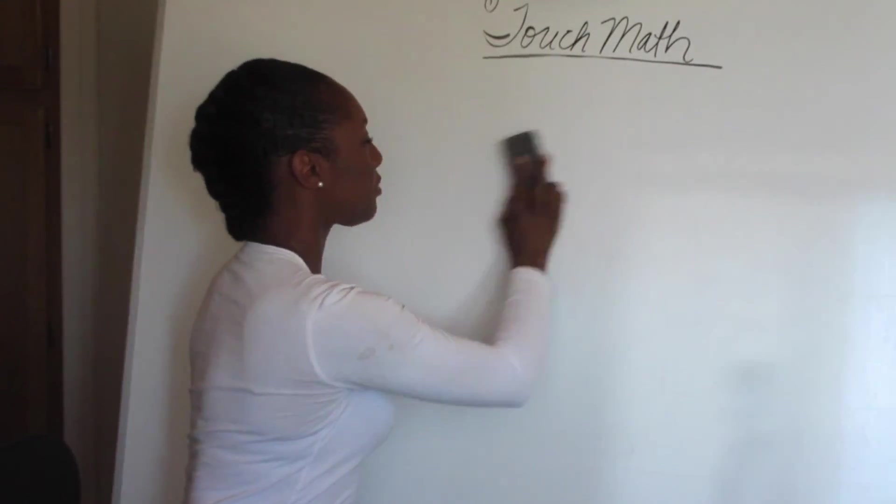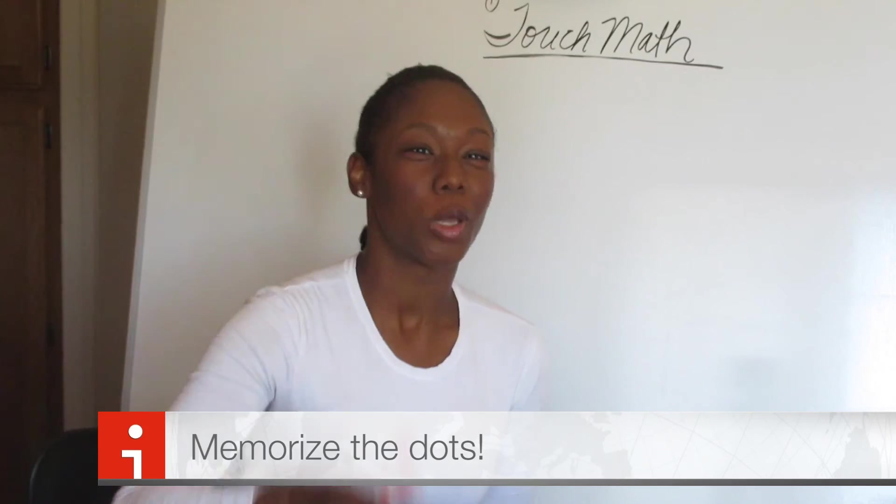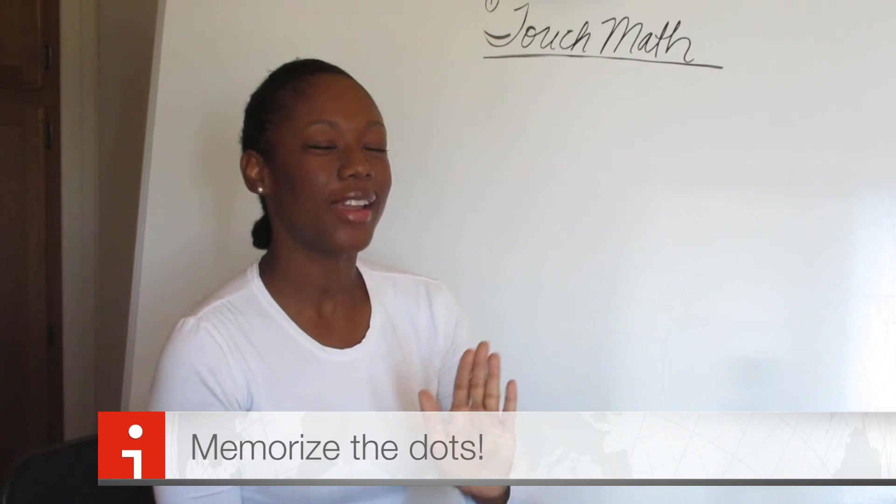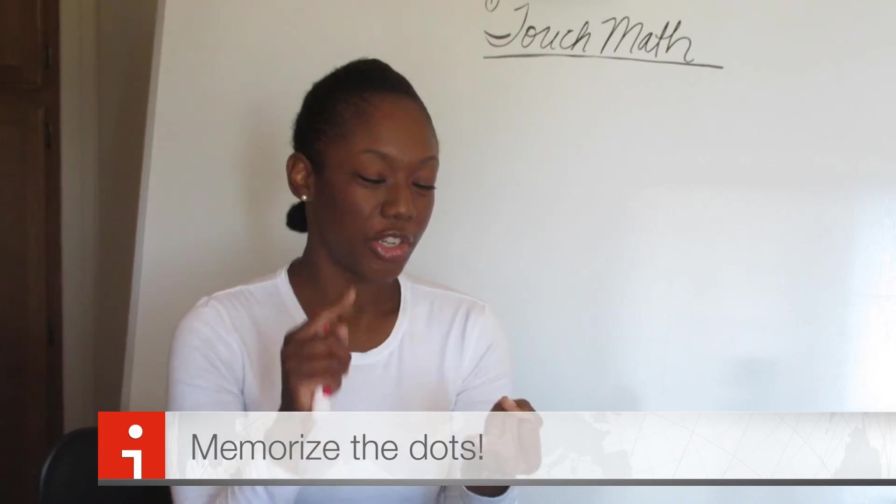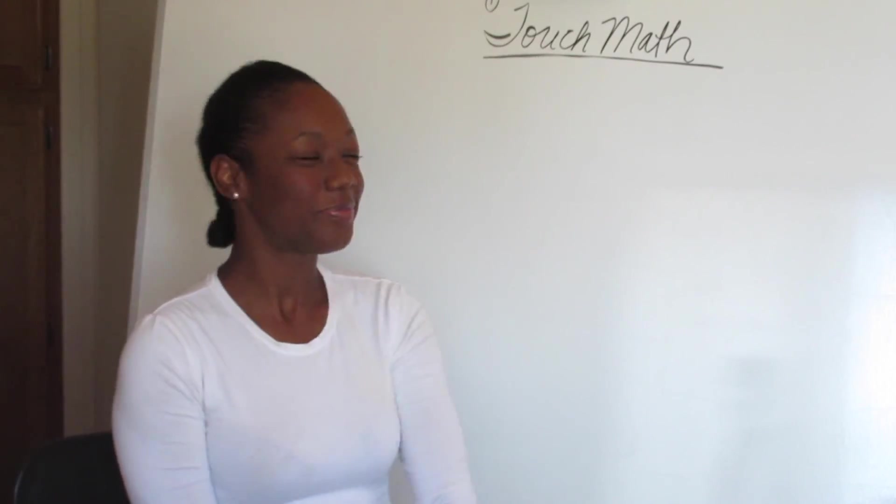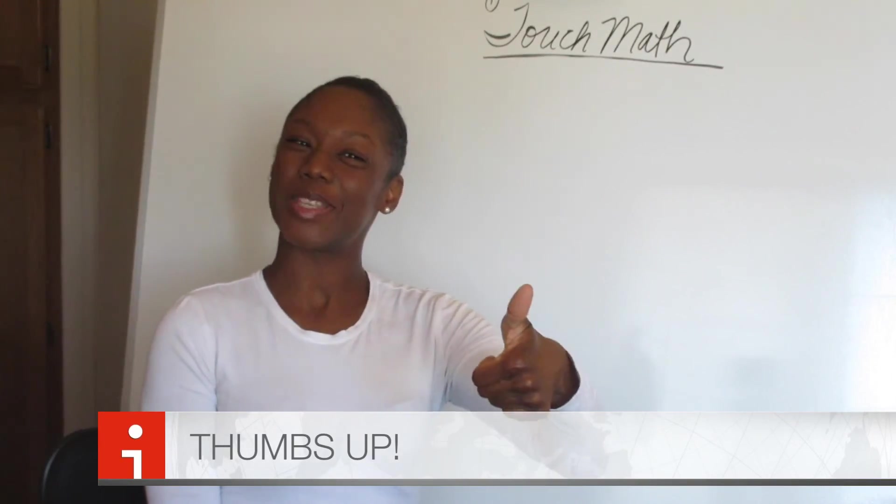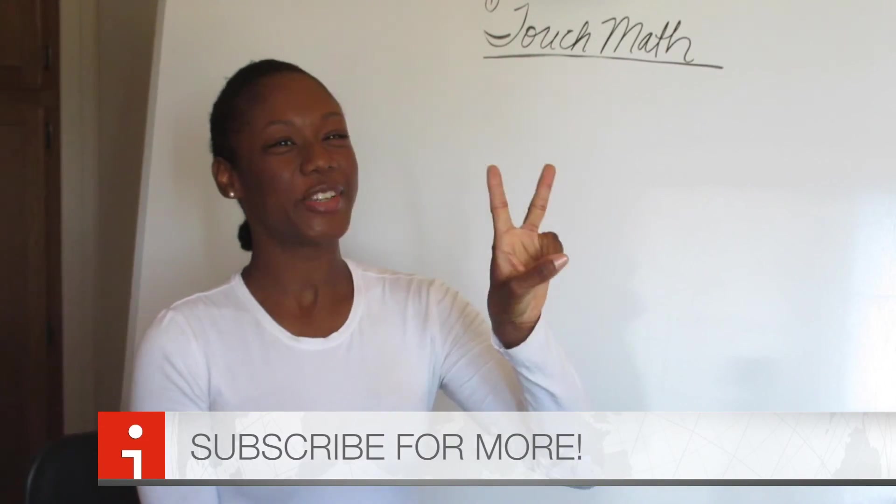So here's the takeaway. The takeaway is each number has dots. Memorize those dots. See the dots, be one with the dots. And every time you see a number, you see those dots. And then you add and subtract based on those dots. No more looking at your fingers. Your fingers are no more, you're done. The dots are your fingers. Very simple. If you have any questions, leave them in the comments below and I will reply. If this video was helpful, go ahead and give it a thumbs up so that others can see it. And I will see you in video number two. Bye.